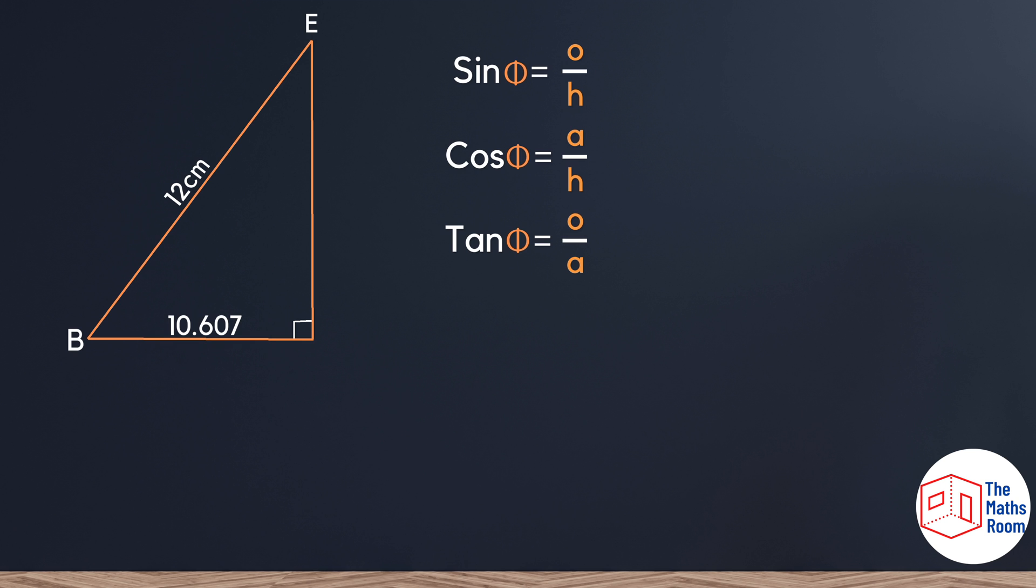Looking at this triangle, we need to calculate the angle at E. As always, the first step is to label our triangle. I always start with the hypotenuse because that's always opposite the 90 degrees. From there, I look at the angle I'm interested in. Drawing a straight line looking away from that angle, we can see that becomes our opposite, which leaves the last side to be labeled as adjacent.